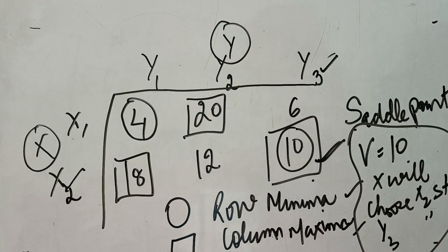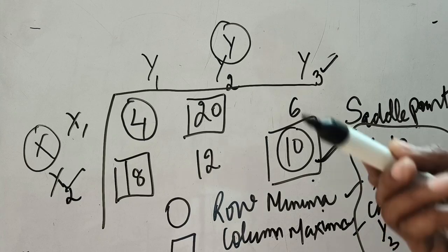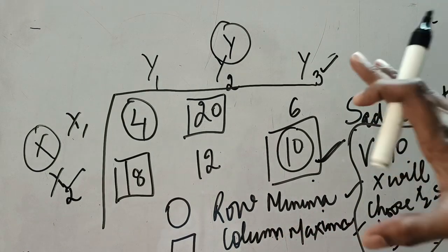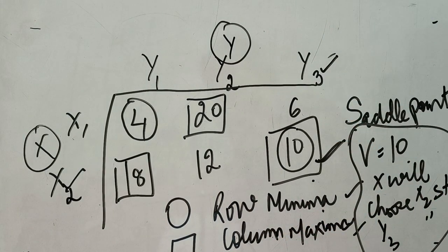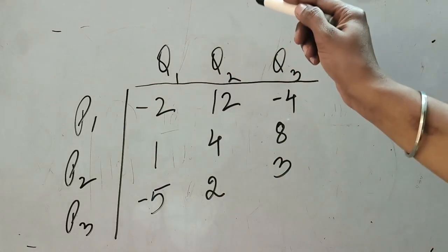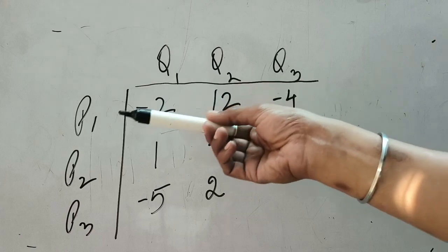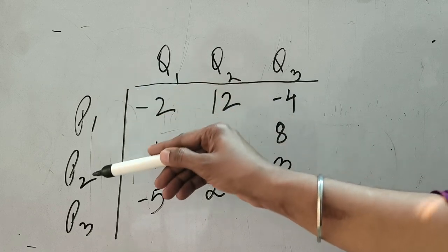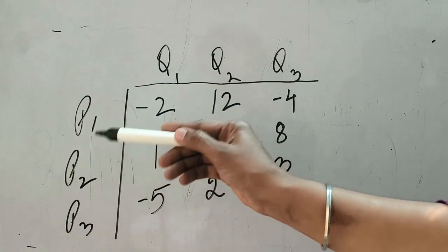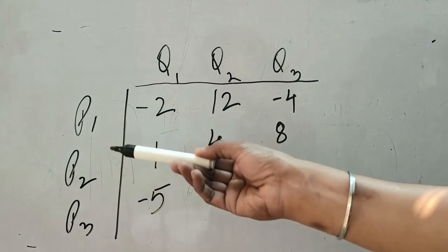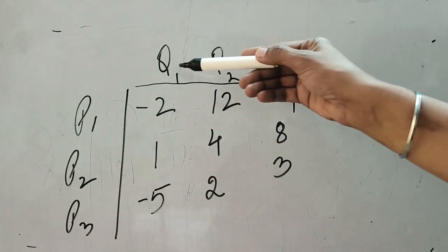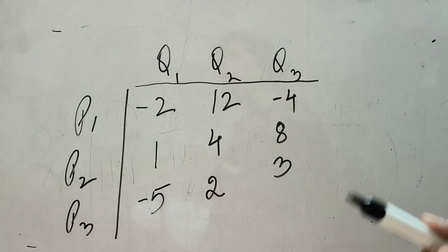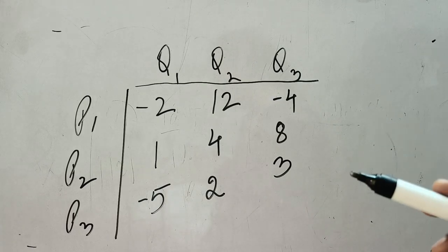In some games, the saddle point may not exist. Those games cannot be solved with pure strategy and we must use mixed strategy, which we will discuss in further videos. Let us see one more question to clarify pure strategy. In this question, there are two competing firms, P and Q, who want to maximize their sales. Firm P has three strategies: home delivery, mail order service, and free gifts.